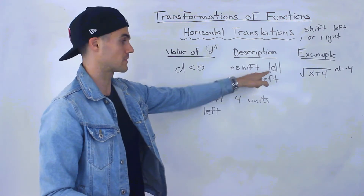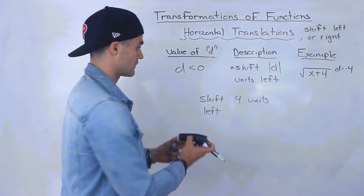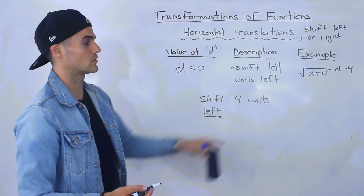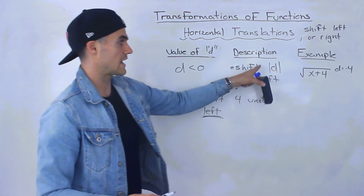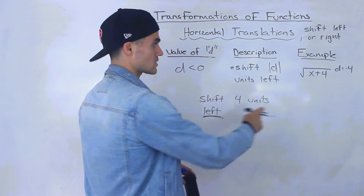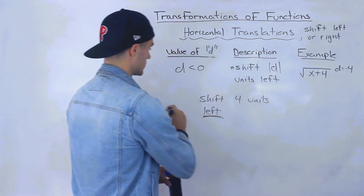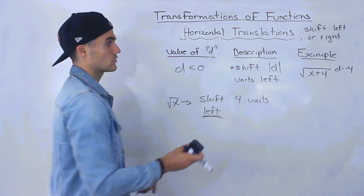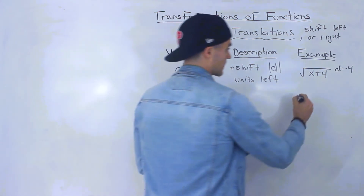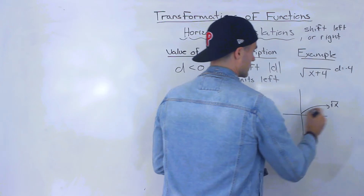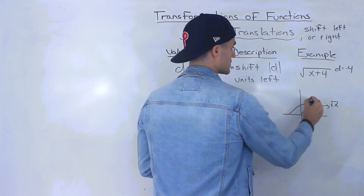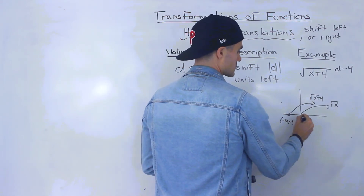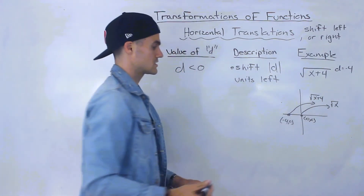That's why the absolute value is used — the fact that d is negative is taken care of by the word 'left,' versus positive meaning right. So the square root of x plus 4 is taking the square root of x and shifting it 4 units to the left. If the square root of x starts at (0, 0), then the square root of x plus 4 would be at negative 4 and 0, because we shifted it 4 units to the left.